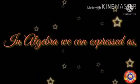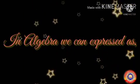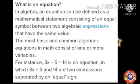In algebra, an equation can be defined as a mathematical statement consisting of an equal symbol between two algebraic expressions that have the same value. The most basic and common algebraic equations in math consist of one or more variables. For instance, 3x plus 5 equal to 14 is an equation, in which 3x plus 5 and 14 are two expressions separated by an equal sign.